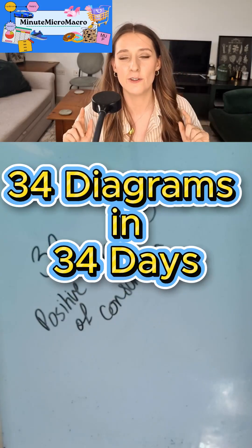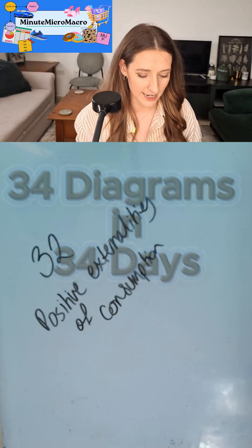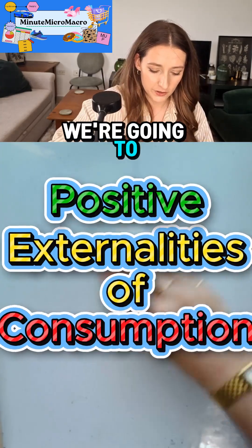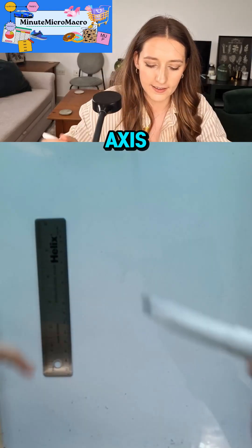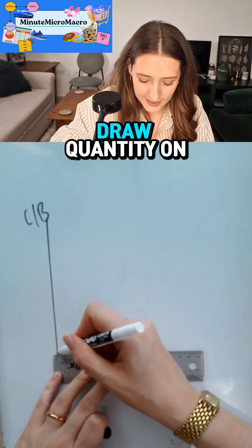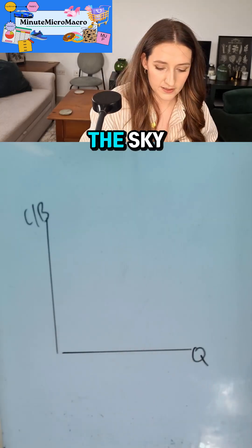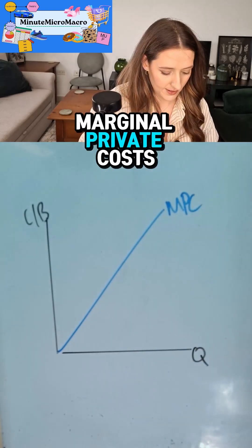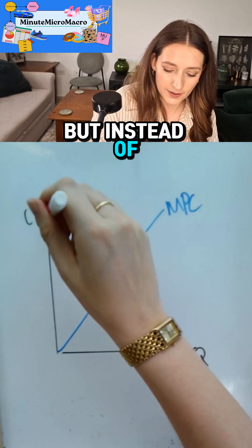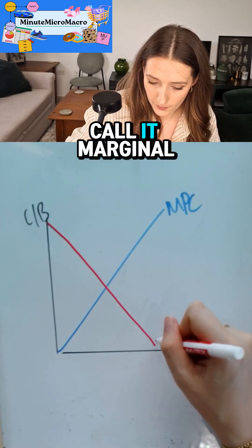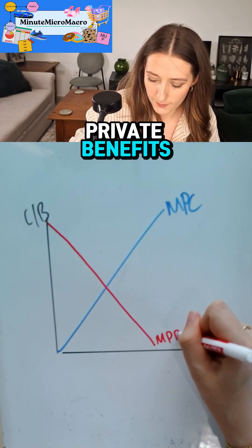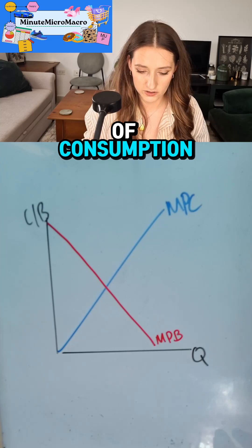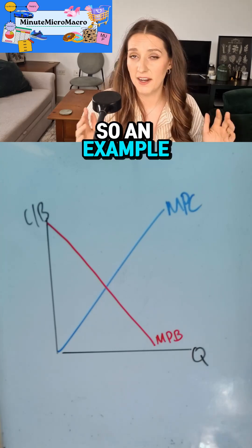Hello and welcome back to 34 diagrams drawn for you in 34 days. We're on day 32, looking at the positive externalities of consumption. We're going to draw cost/benefit on our y-axis and quantity on our x-axis. We'll draw supply — except instead of calling it supply, we'll call it marginal private costs — and draw demand down, calling it marginal private benefits.